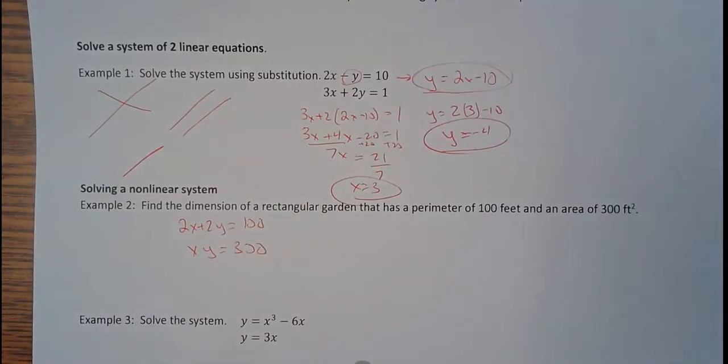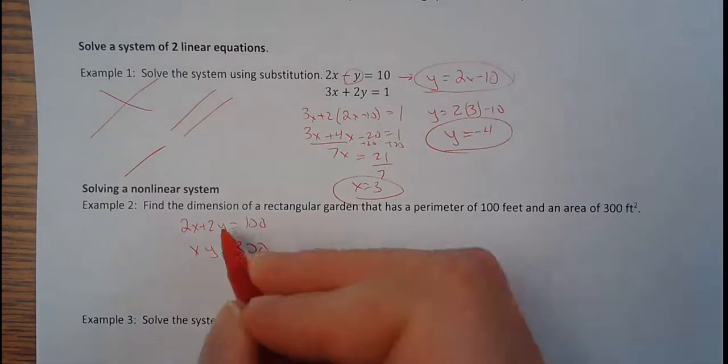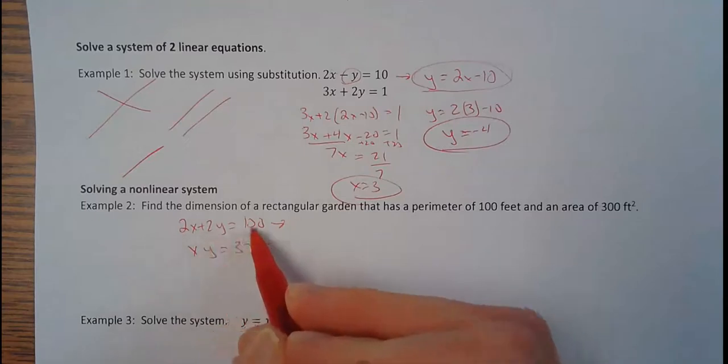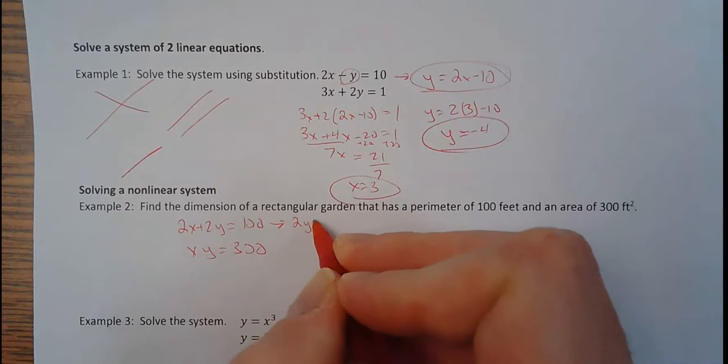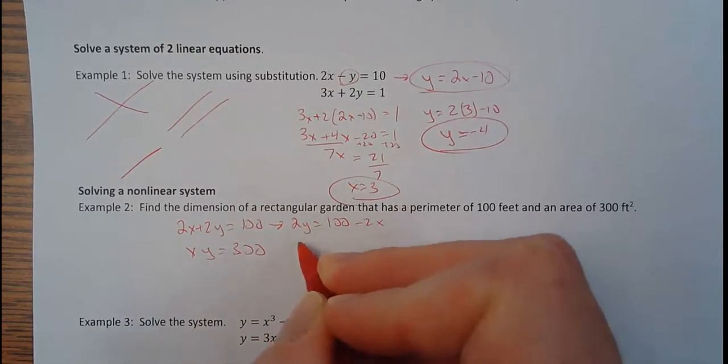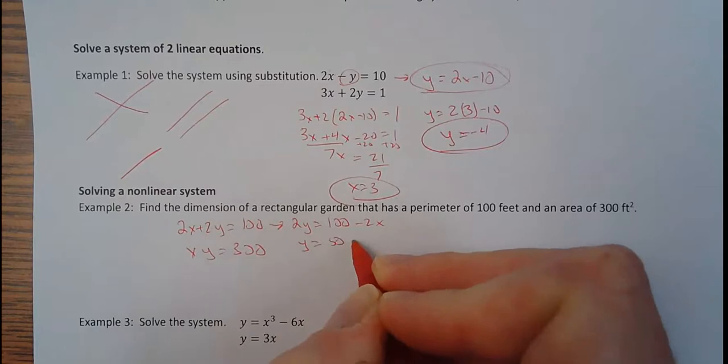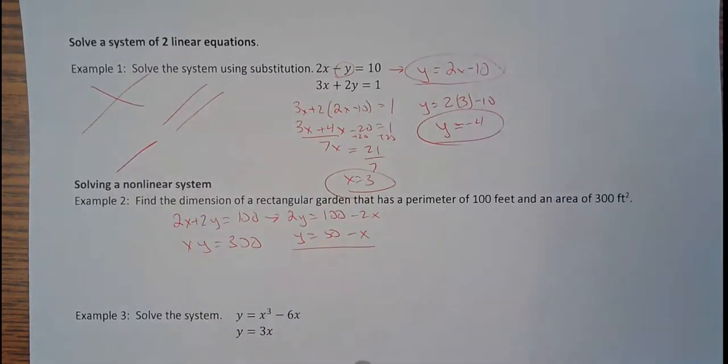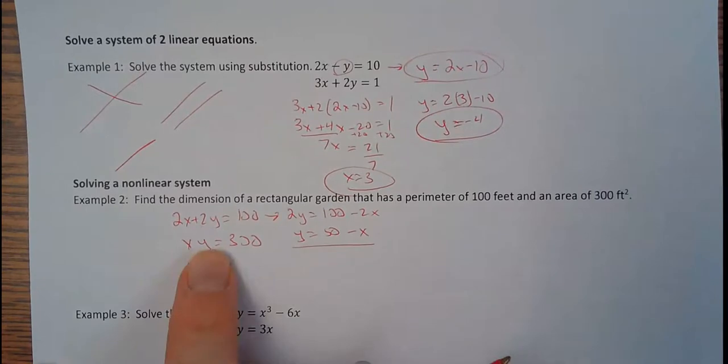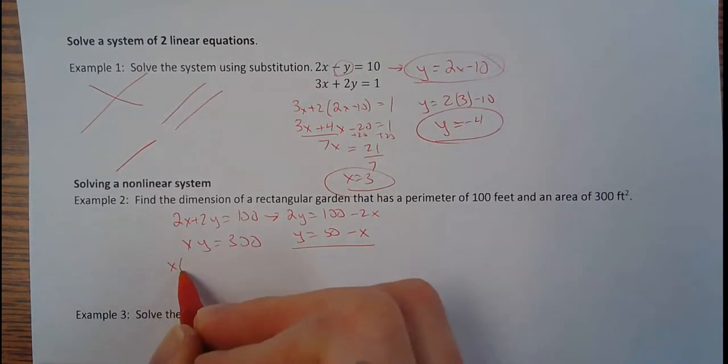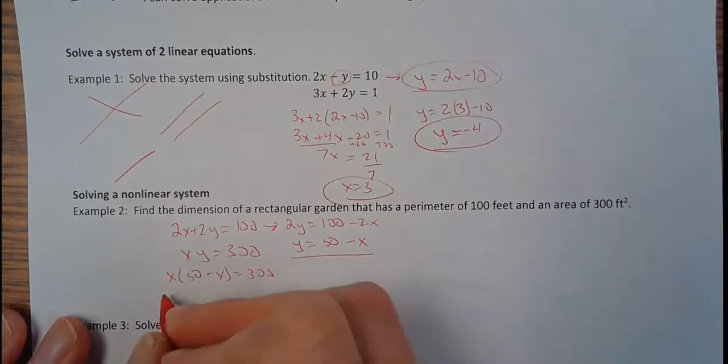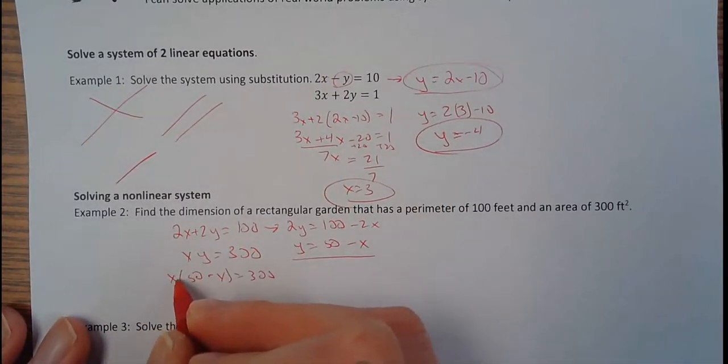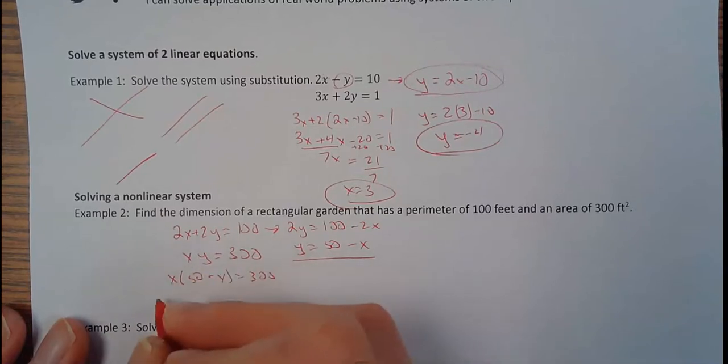So there's one set of dimensions that makes both of these true. First off, I'm going to take this equation here, I'm going to solve for y. So I'm going to bring the 2x over. It would be 2y equals 100 minus 2x. Divide everything by 2. So we've got y equals 50 minus x. I'm going to plug that in for this y right here. So we've got x times 50 minus x equals 300. The left side, I'm going to do this. It would be 50x minus x squared, but I'm going to rearrange that.